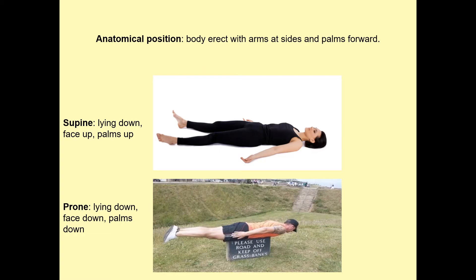In anatomy, we have some anatomical terms. First, anatomical position refers to the body as it is standing straight up looking forward with the palms facing forward. Supine means laying down with the palms up with the chest facing upwards, and then prone is lying on your chest facing downwards.